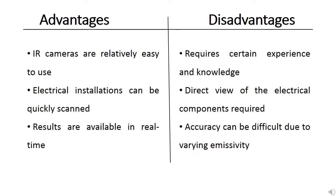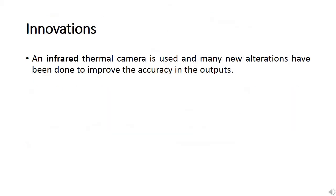Advantages: IR cameras are easy to use, electrical installations can be quickly scanned, and results are available in real time. Disadvantages: requires certain experience and knowledge, direct view of electrical components is required, and accuracy can be difficult due to varying emissivity. Innovations include an infrared thermal camera with many new alterations to improve accuracy in outputs.